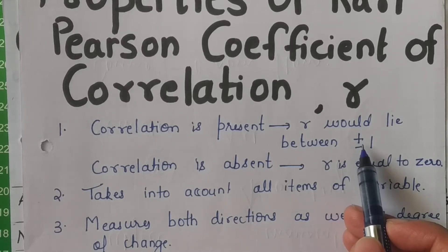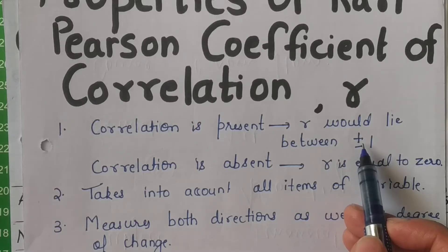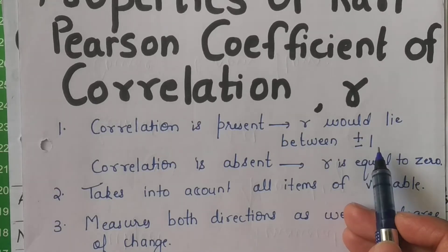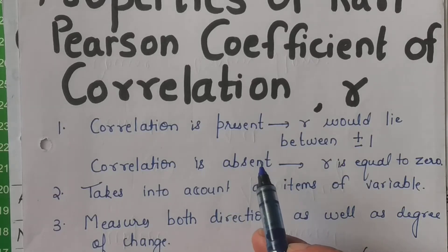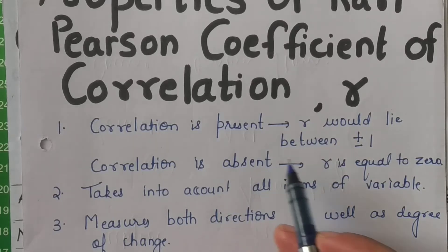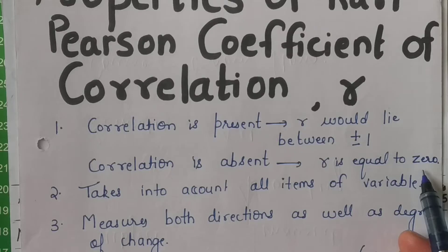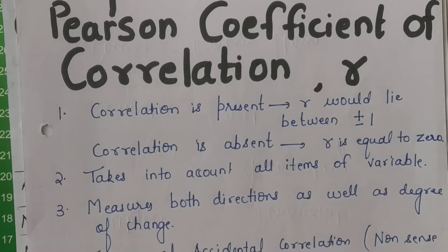So it will neither be less than minus 1, nor will be more than plus 1, and it can be 0. If the correlation is absent, agar correlation do variables pe exist hi nahi karta, then r ki value 0 hoti hai. This is the very first property.